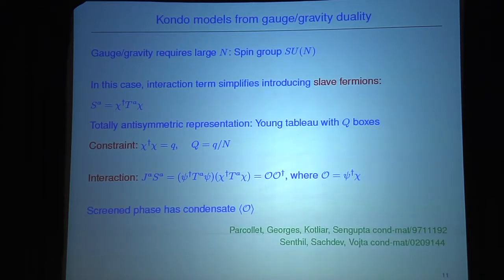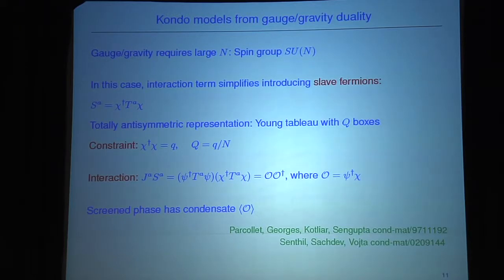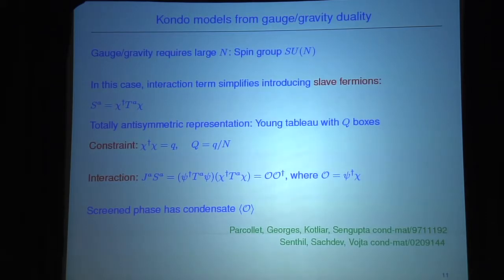As discovered within condensed matter physics, in the screened phase we have a condensate — this operator condenses to a new ground state. This phase transition in the lower-dimensional system can only happen in the large-N limit; with 1/N corrections it washes out to a crossover. This very much suggests what we have to do on the gravity side: our model will be an AdS_2 holographic superconductor, which has precisely this condensate.